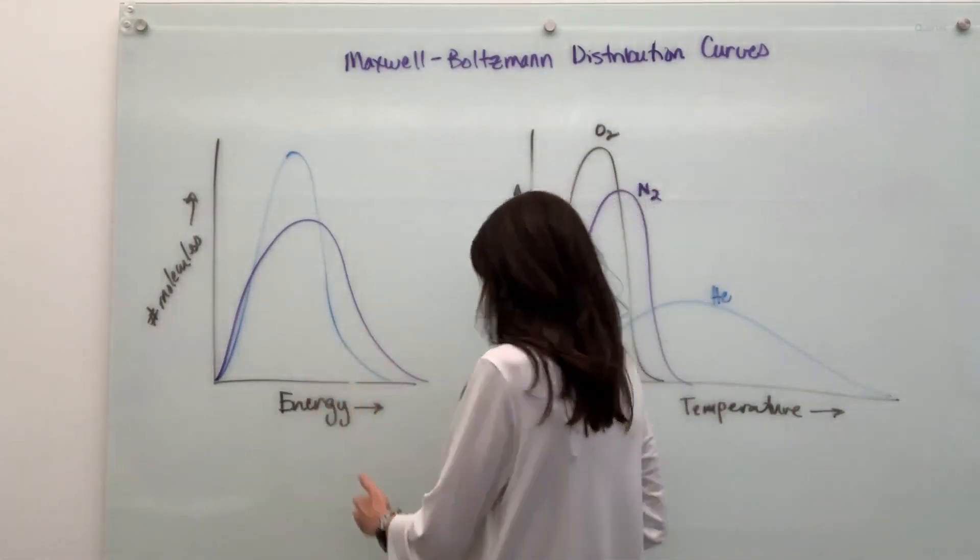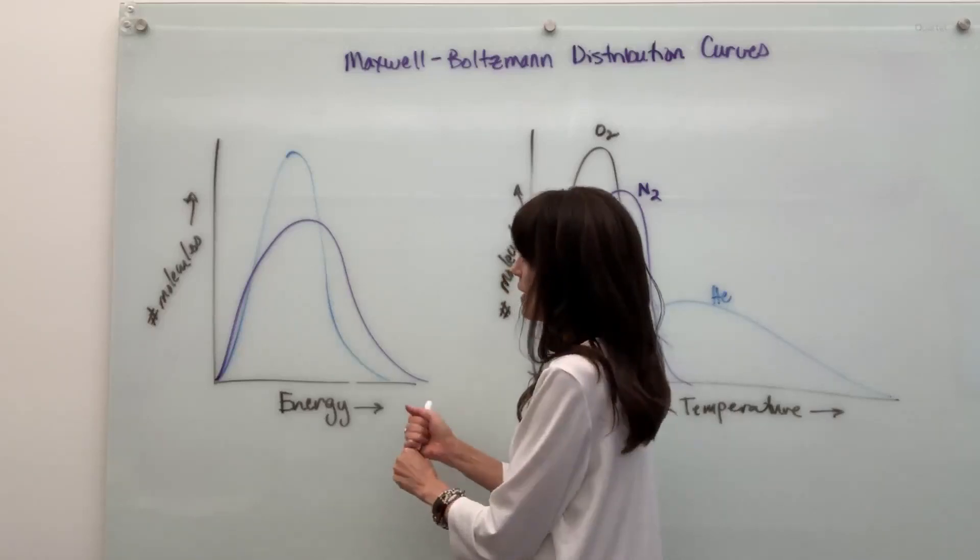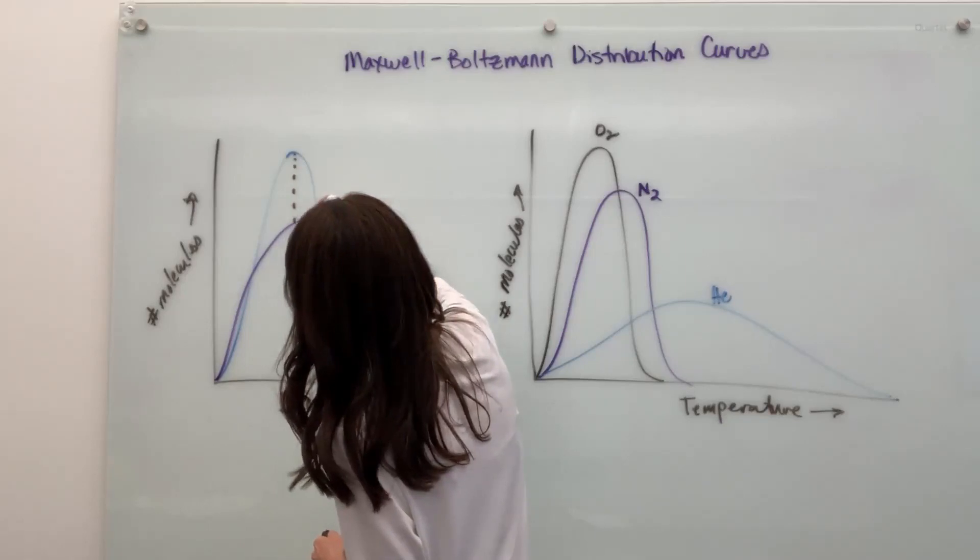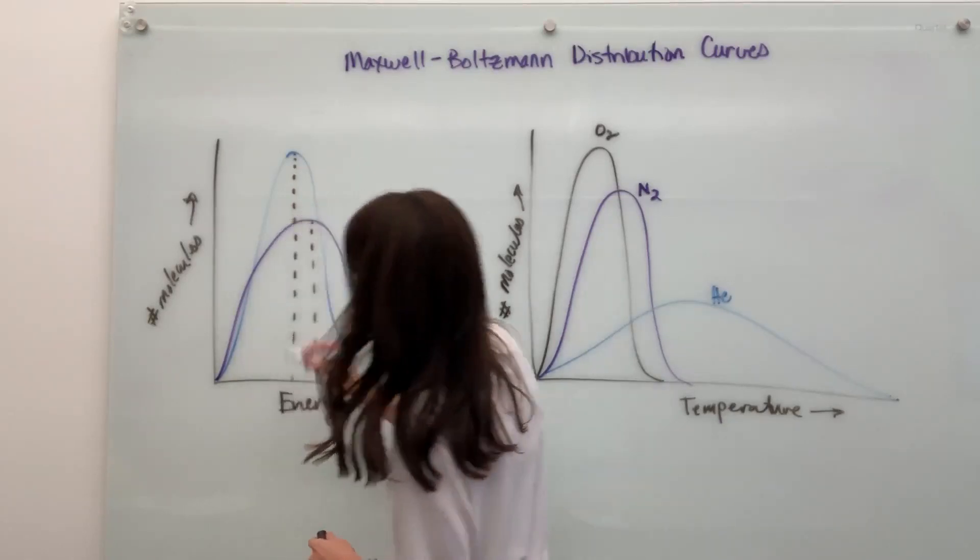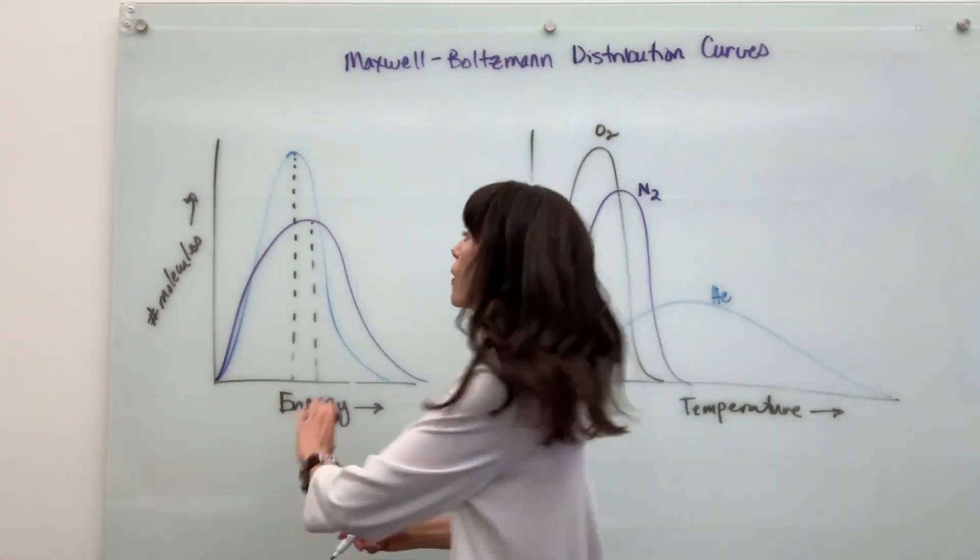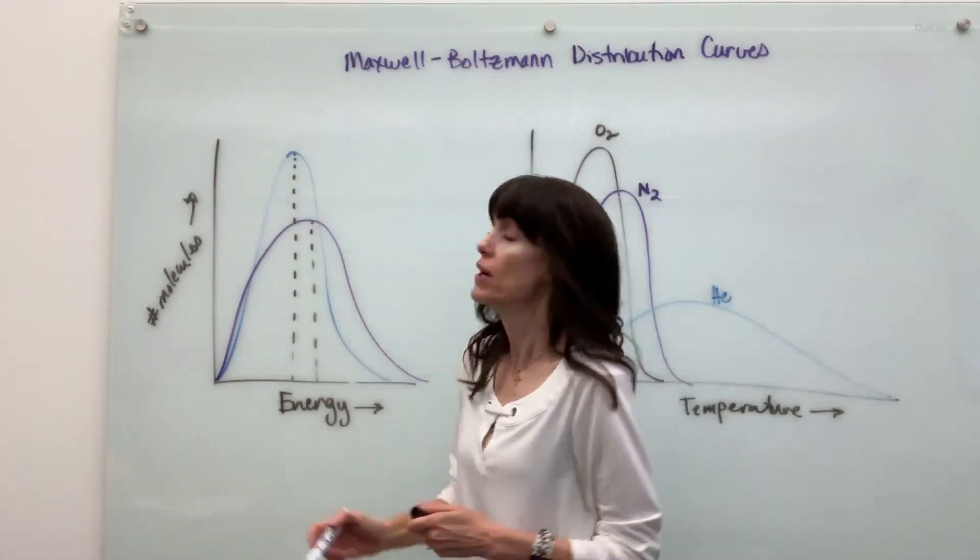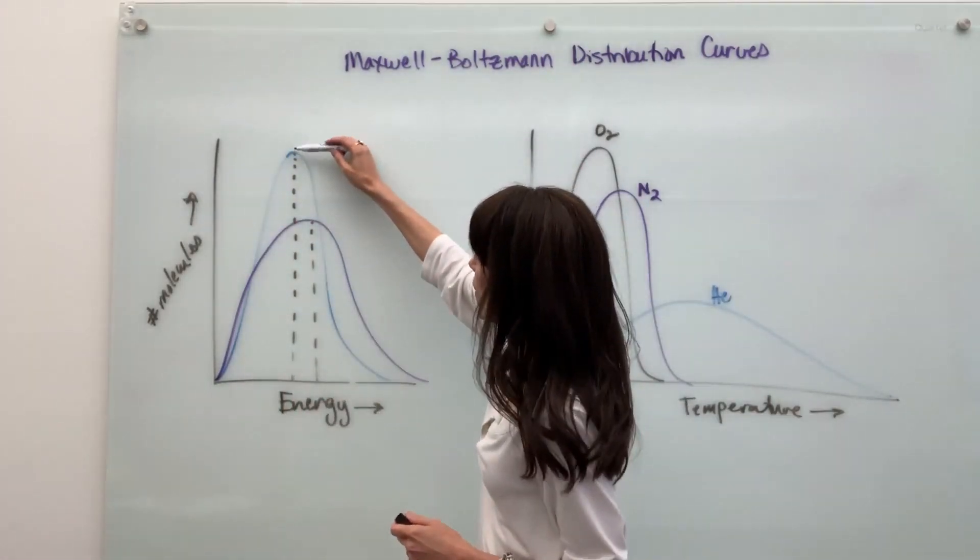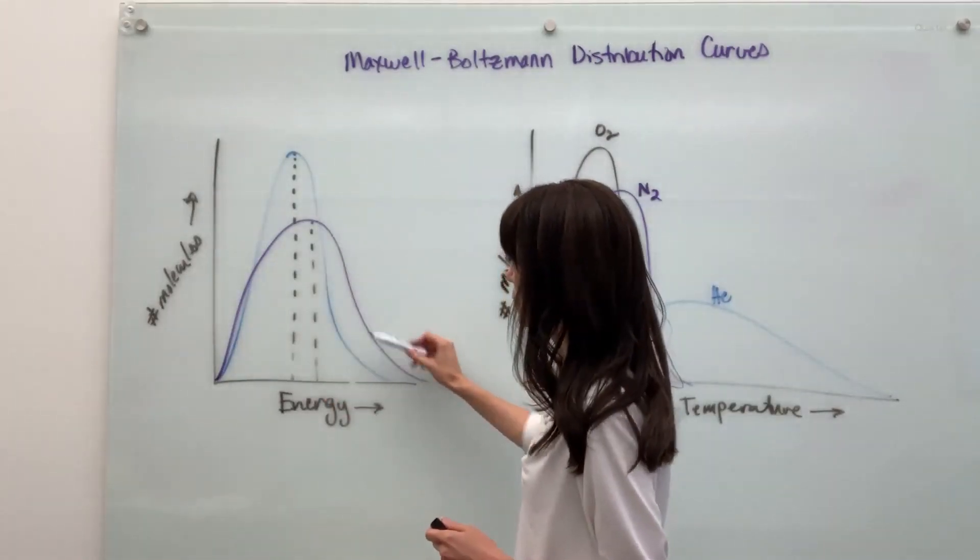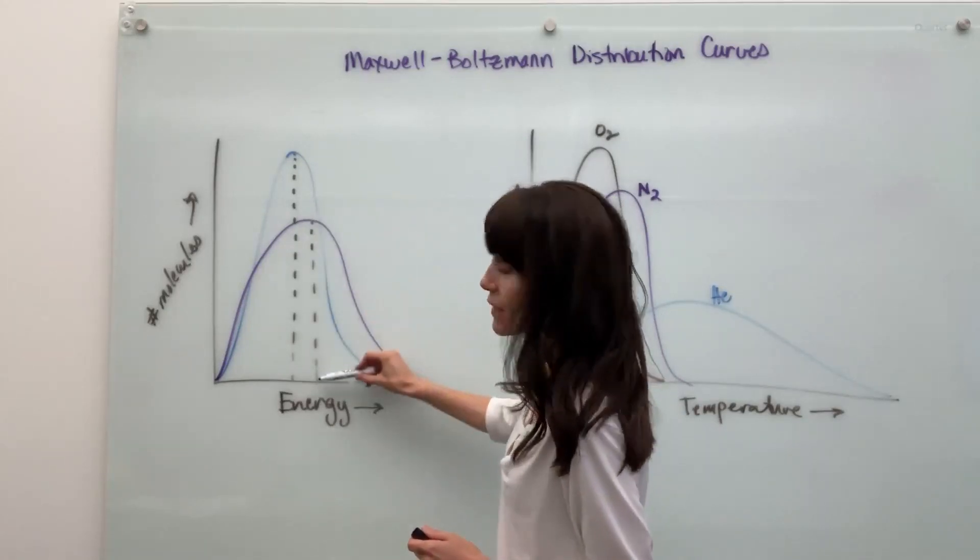If you look at the apex, the very top, and pull that down for each of these, that top shows the average energy for all of the molecules under that curve. Notice for the blue curve, the average energy hits right there. For the purple curve, the average energy hits right here.